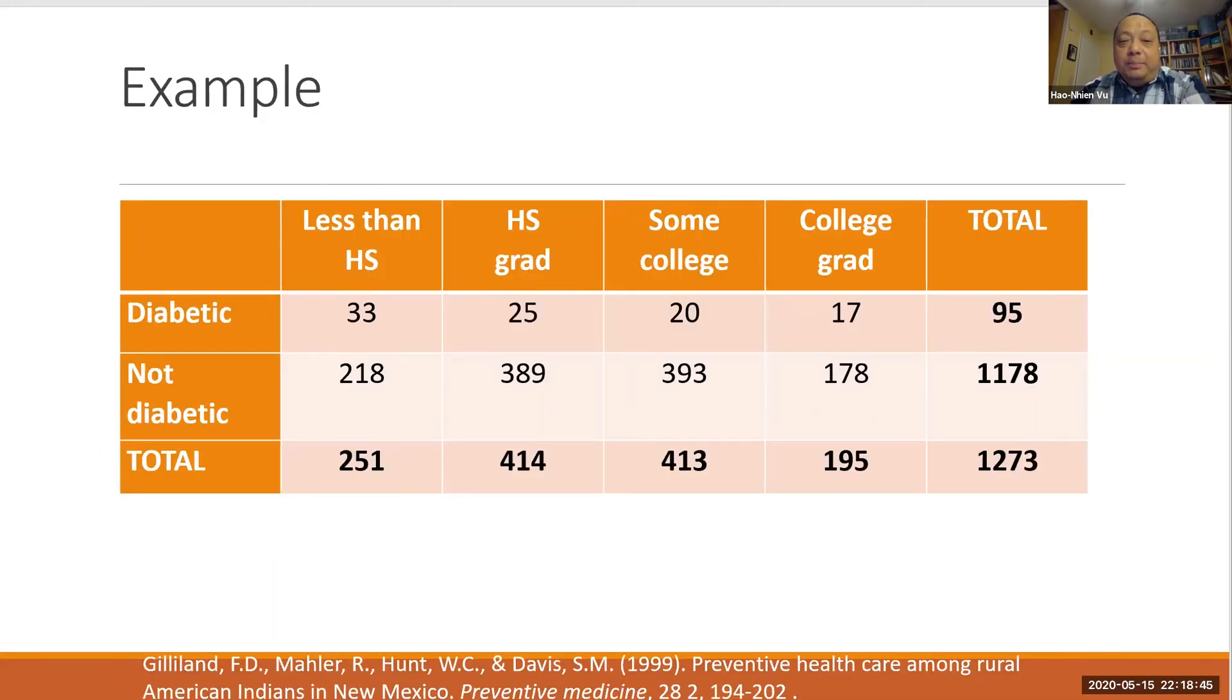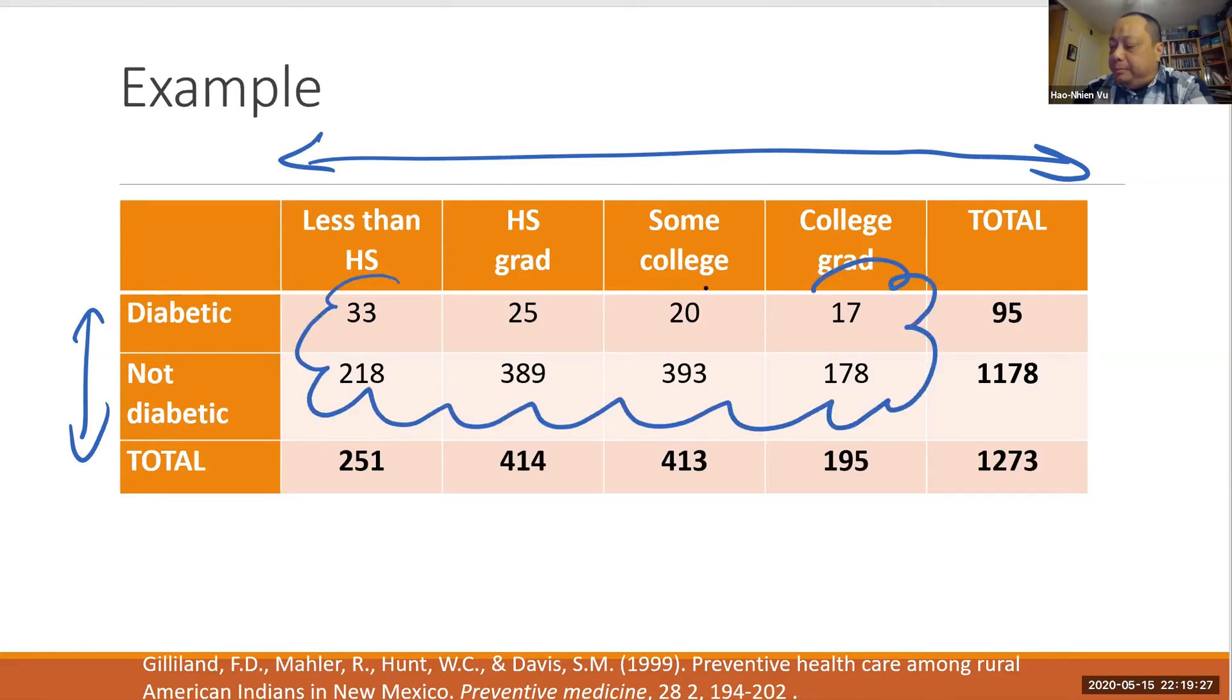Right, so let's take an example. Researchers studied diabetes in Native Americans in New Mexico. This summary table shows the cross classification of educational level versus diabetic status. So this is a table of the actual number of people that match particular descriptions of people having some college and being diabetic - 20 of them. These are the actual number of people that researchers found in the field. These are the frequencies that the researcher actually observed. So we call them the observed frequencies.